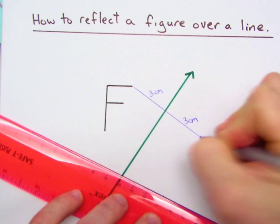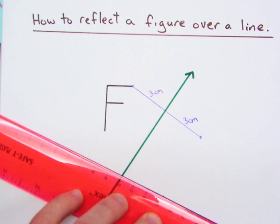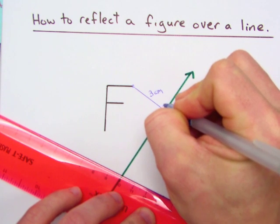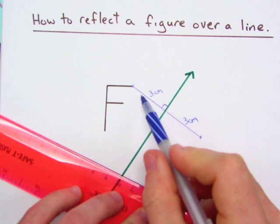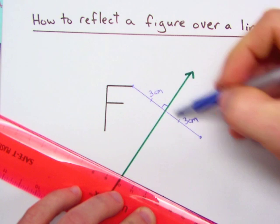Okay, and this is where my point is going to be. So again, we have a perpendicular line, and we actually have a perpendicular bisector right here.